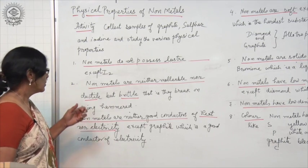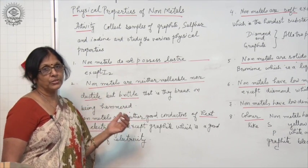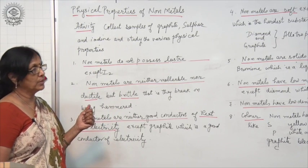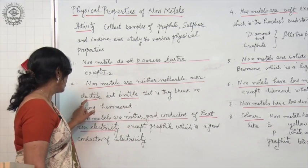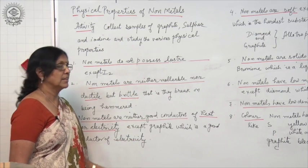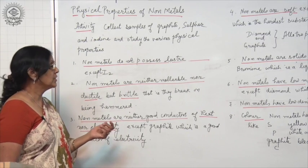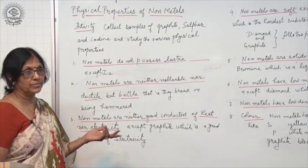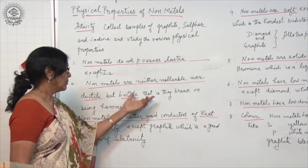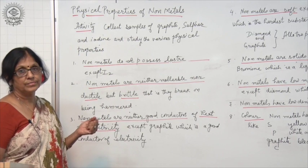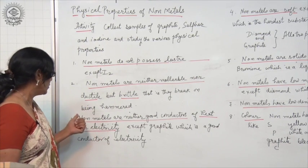Also, non-metals cannot be beaten into thin sheets nor can be drawn into thin wires. So non-metals are neither malleable nor ductile. If you beat them with a hammer, non-metals will break into pieces. Non-metals are brittle. They break on hammering.